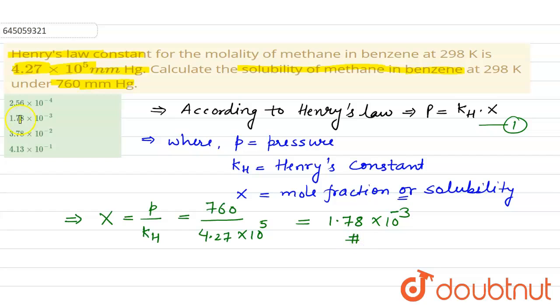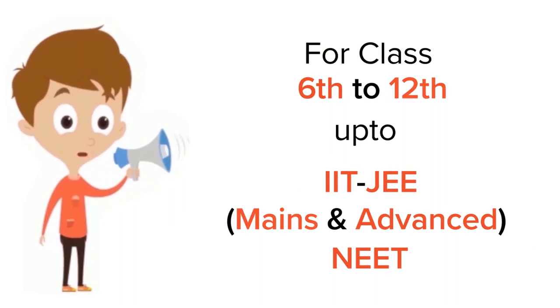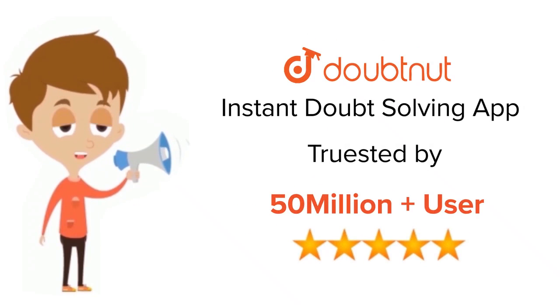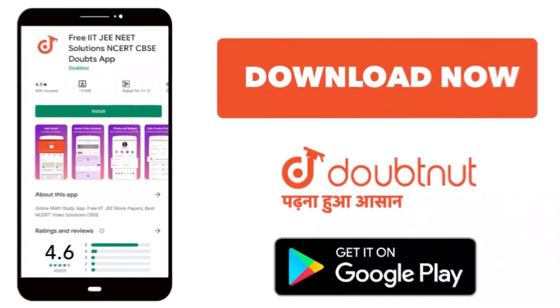So, our answer is the second option. This is our answer. Thank you so much. For Class 6 to 12, IIT-JEE and NEET level, trusted by more than 5 crore students. Download Doubtnut app today.